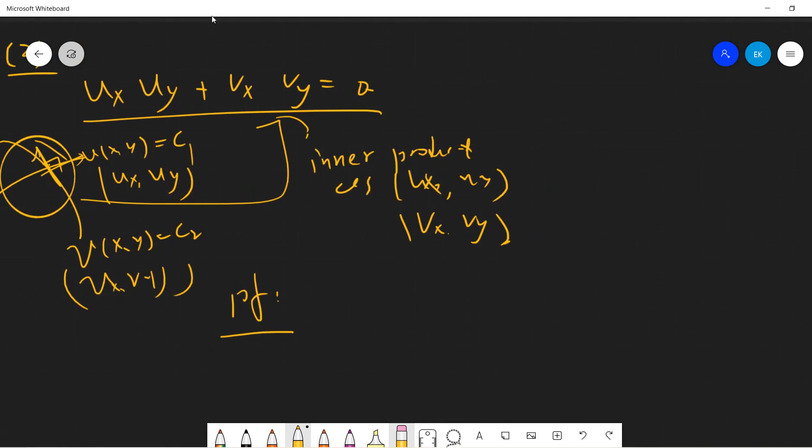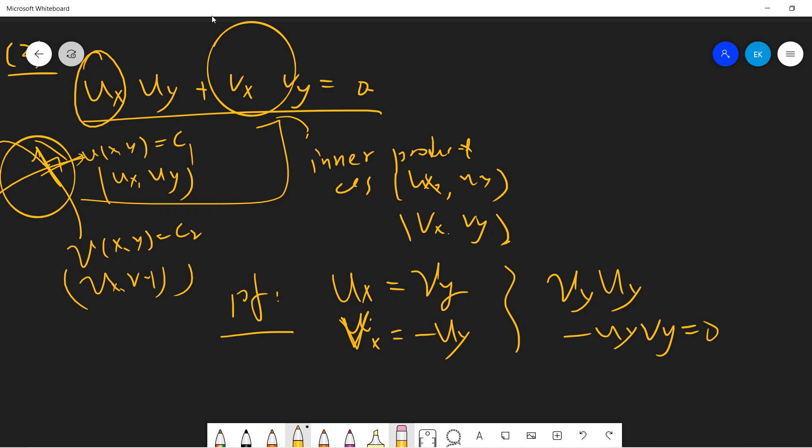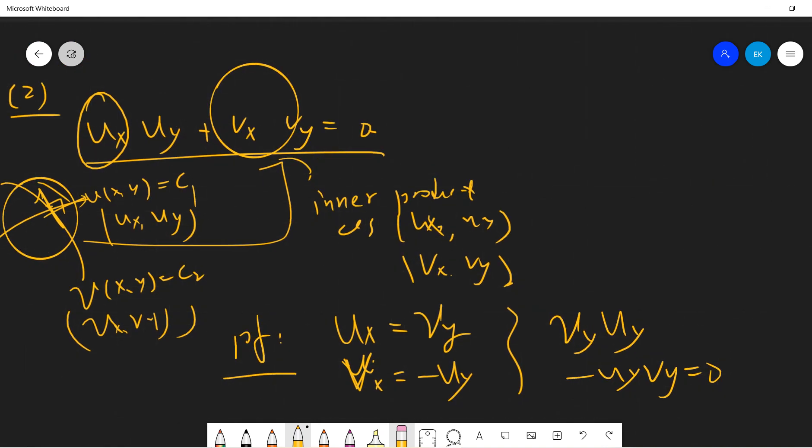The proof is also straightforward because ux is vy and vx is minus uy. So we just replace all of these terms related to x.